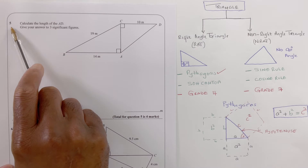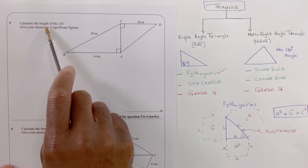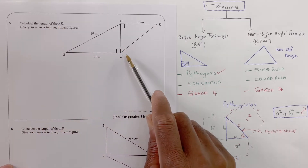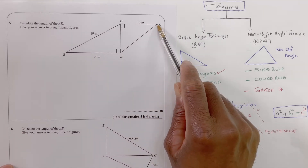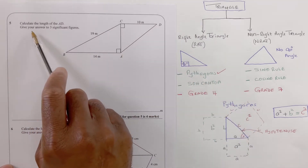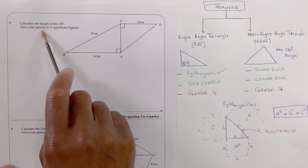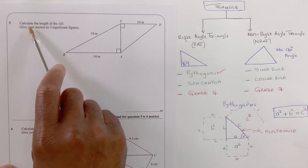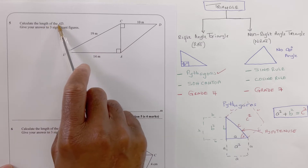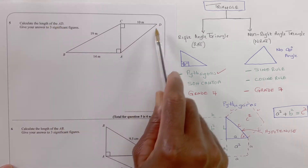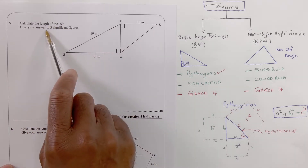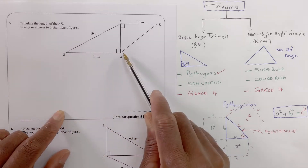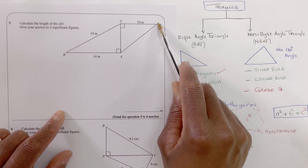Question 5: calculate the length of AD. Give your answers to three significant figures. So we need to calculate the length of AD and give our answers to three significant figures.